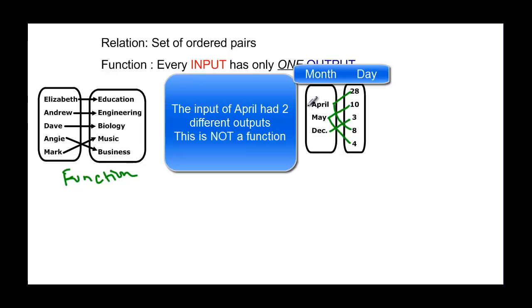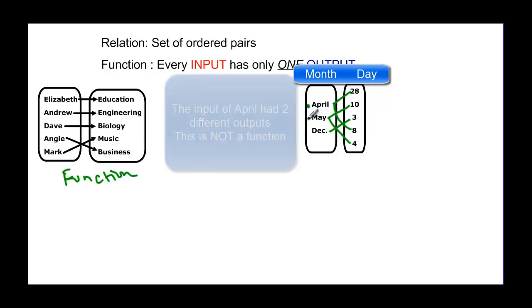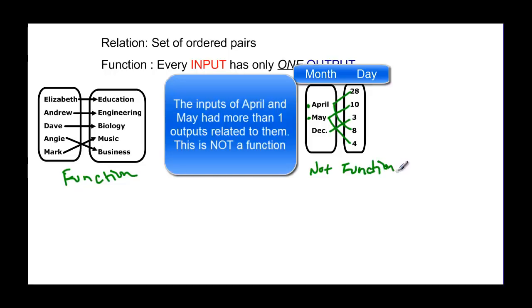Now you can see that when you look at April, it went to two different outputs. And when you look at May, the same thing happened. We have two birthdays in May. So this one is not a function because those inputs of April and May had more than one output that was related to it.